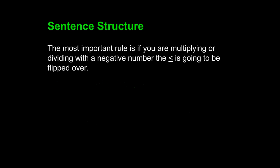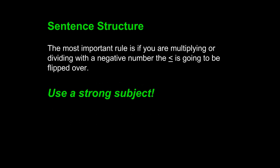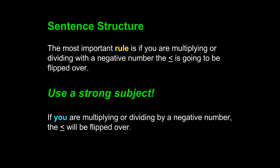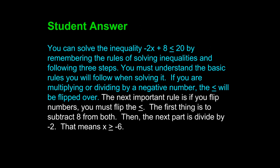Let's look at another example: 'The most important rule is if you are multiplying or dividing with a negative number, the less than or equal to sign is going to be flipped over.' Using a strong subject with 'you': 'If you are multiplying or dividing by a negative number, the less than or equal to sign will be flipped over.' 'Rule' was the original sentence subject and was not exceptionally clear, and it was not consistent with previous sentences. By using 'you,' we have created a consistent voice and a consistent series of sentence subjects. We see consistency of voice and consistency of subjects, simply because the writer has paid attention to the prompt and used that sentence subject throughout.